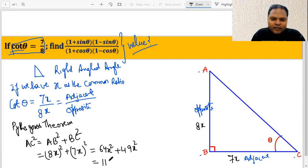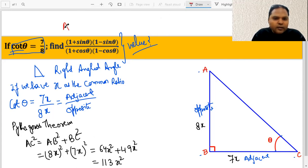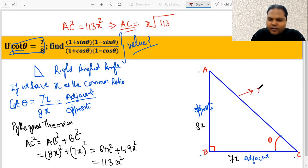And that's like 64x² + 49x². Now if we add them up, it's 113x². So what we are getting here is that AC² = 113x², and hence we can say that AC is equal to x√113. And now that's our hypotenuse, so we can simply put it here - that is x√113.